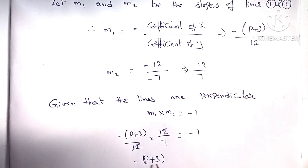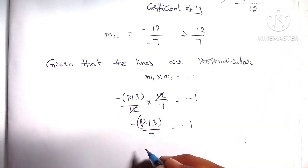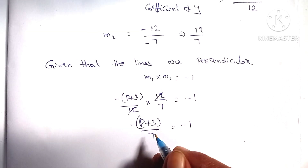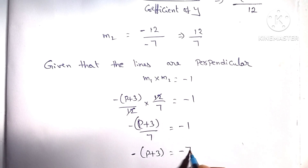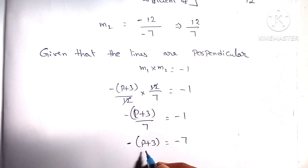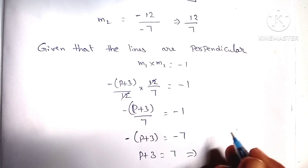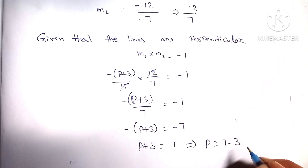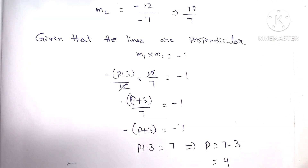Minus of p plus 3 by 7 equal to minus 1. So minus of p plus 3 equal to minus 7. Both sides have minus, so the minus will cancel. Therefore p plus 3 equal to 7, which gives p equal to 7 minus 3, which is equal to 4. So the value of p is 4.